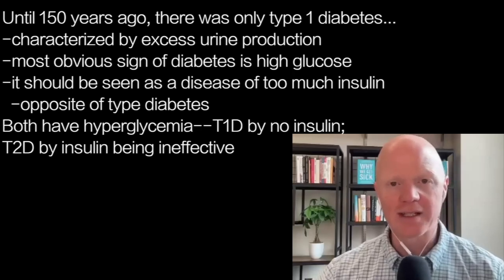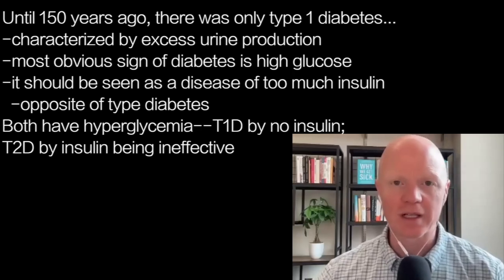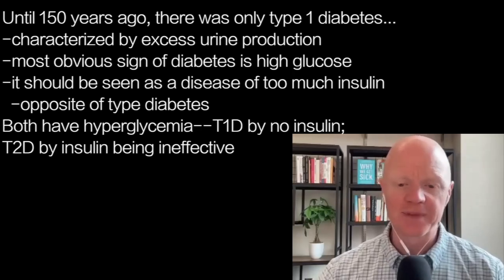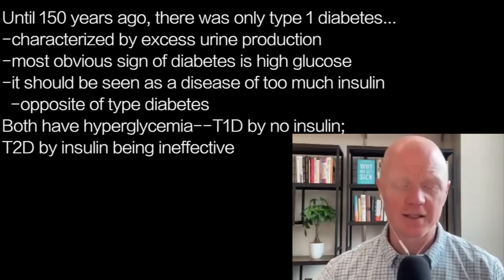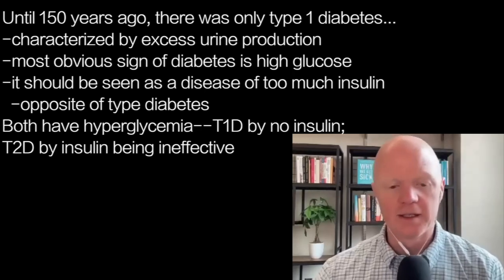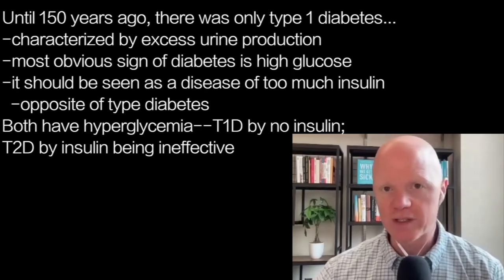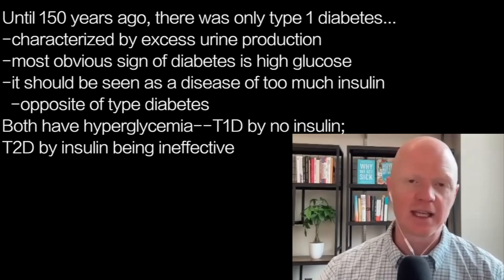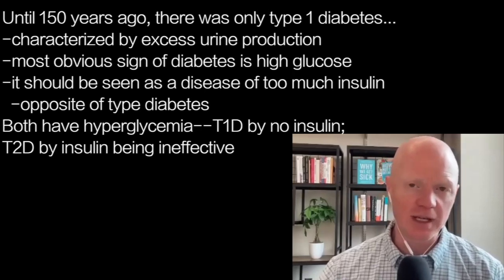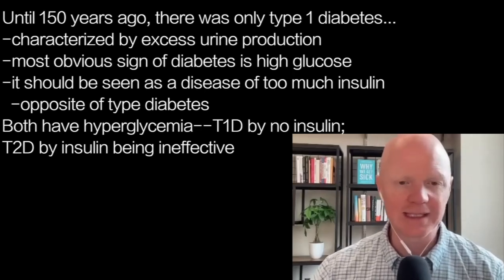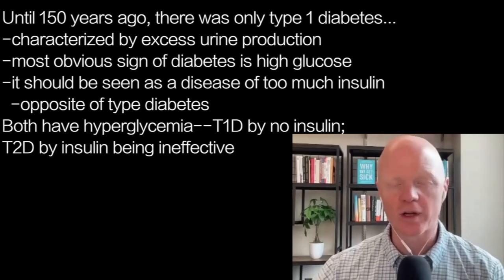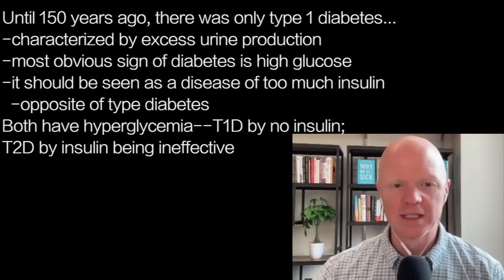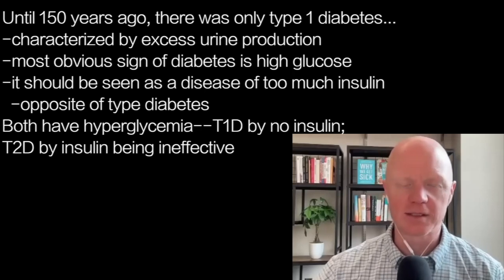They both share a tendency for hyperglycemia, but they get to that end through two totally different means. In the case of type 1 diabetes, it's because of a true deficiency of insulin. In the case of type 2 diabetes, it's because the insulin isn't working very well — in other words, insulin resistance.